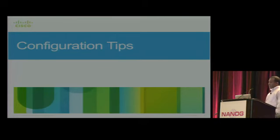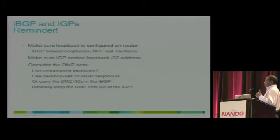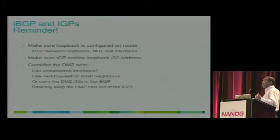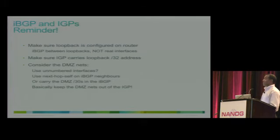Now for some configuration tips and a summary of discussions with respect to configuration. It's very important to use loopback IP addresses for IBGP peering, and also use the loopback IP address as a next-hop using next-hop-self instead of using the directly connected interface IP address as a next-hop, which is the default behavior.